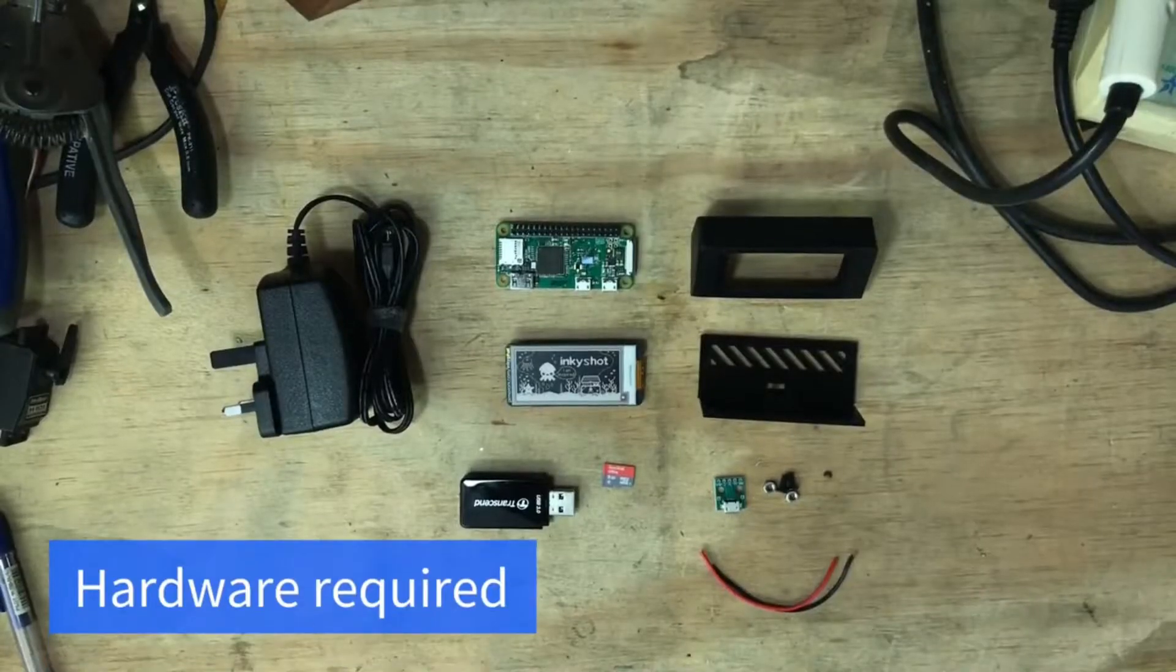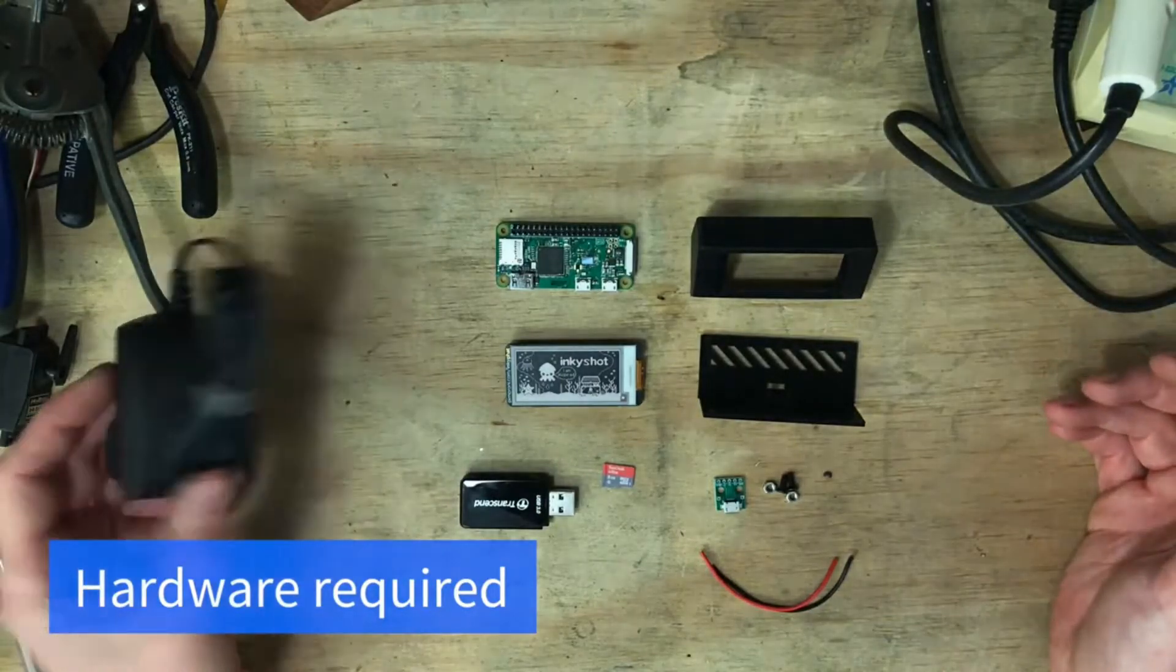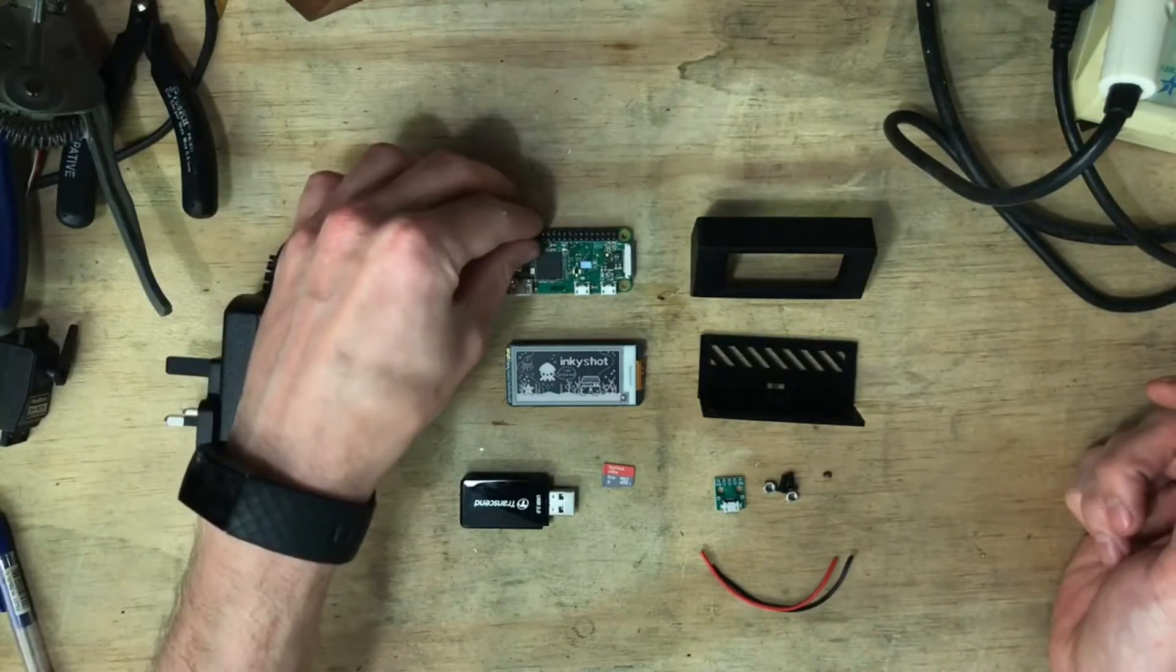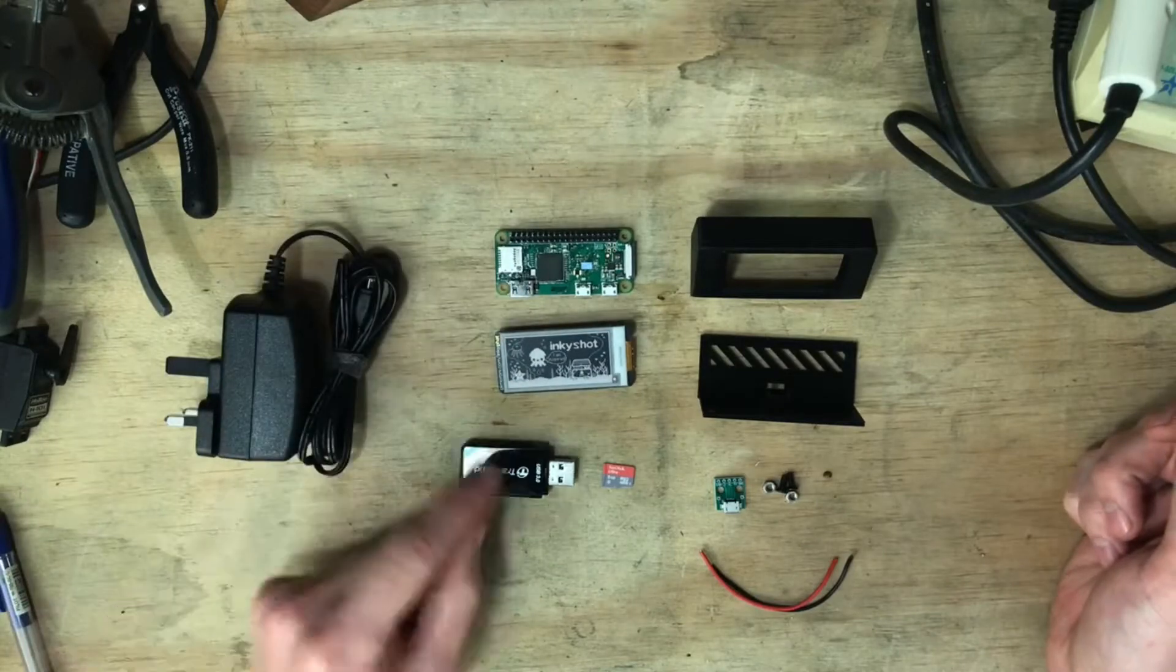We have all the parts that we need right here. We've got a Raspberry Pi power supply, a Raspberry Pi Zero WH, Pimoroni Inky pHAT, and SD card reader.